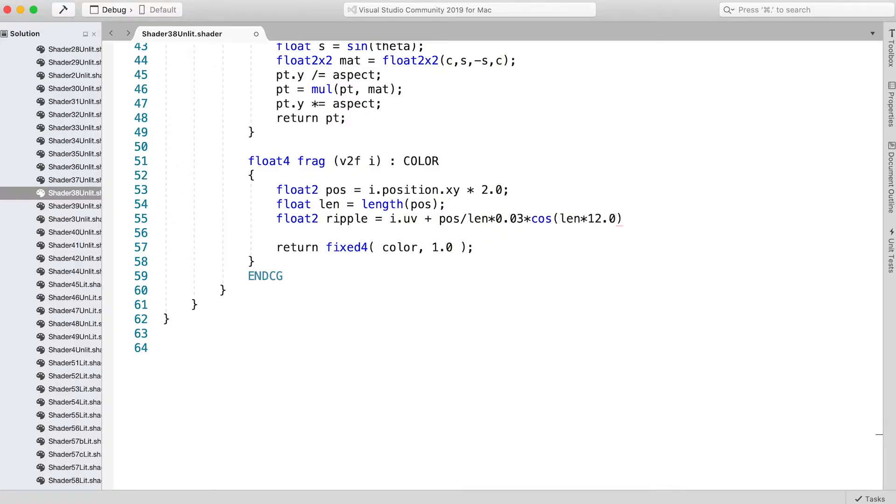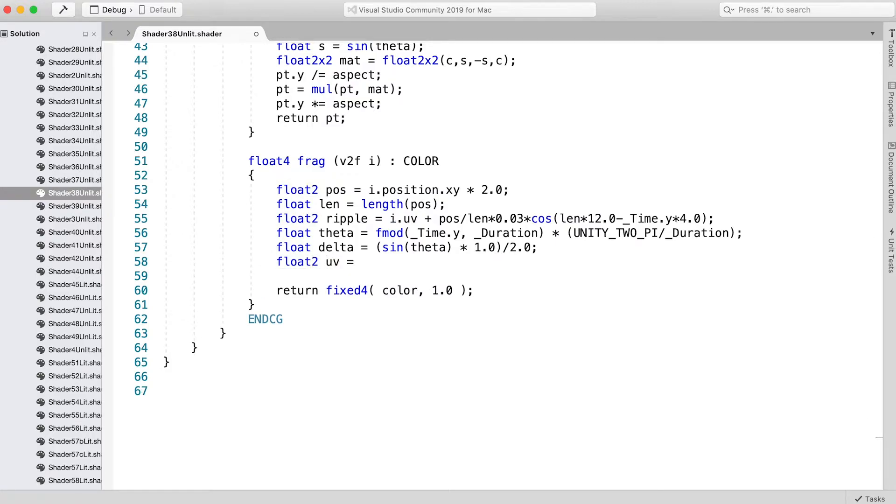times cos(len*12 - _Time.y*4); float theta = fmod(_Time.y, _Duration) * UNITY_2_PI / _Duration; float delta = sin(theta) + 1 / 2; float2 uv = lerp(ripple, i.uv, delta); fix3 color = tex2D(_MainTex, uv).rgb;